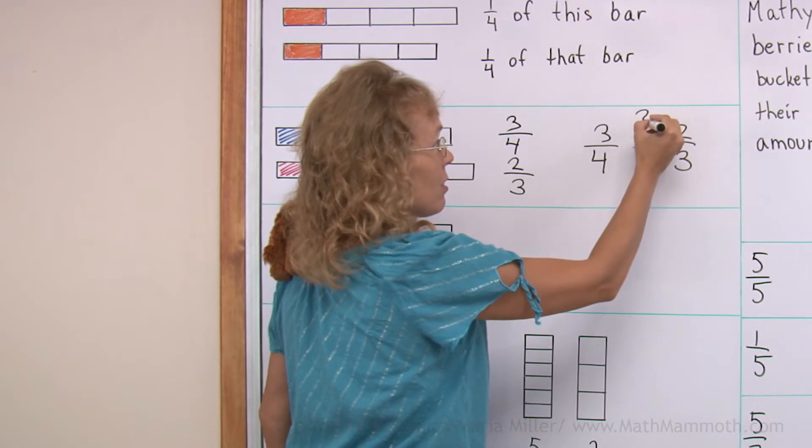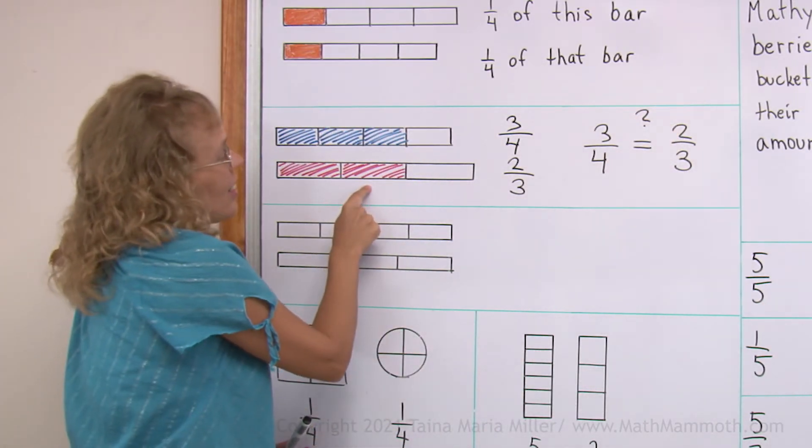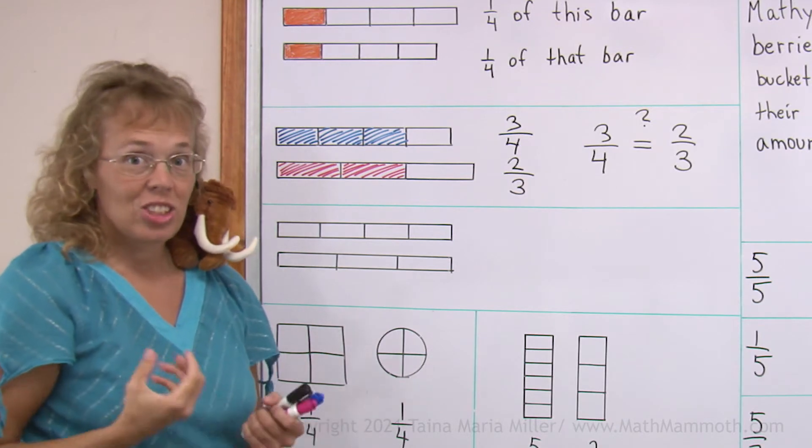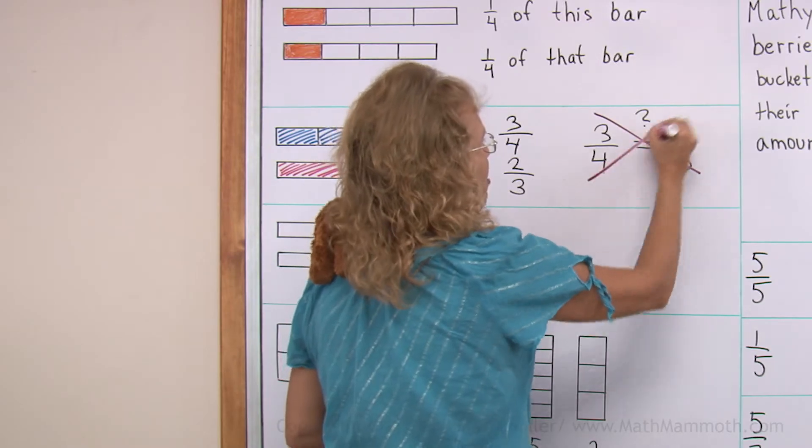But does that really mean that three-fourths is equal to two-thirds? It is in this case but it is not in general. It is not true in general for fractions. Let's cross this out so you don't think that.